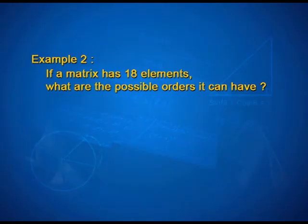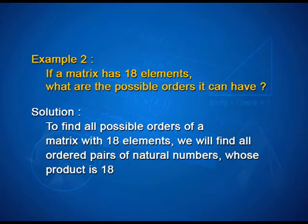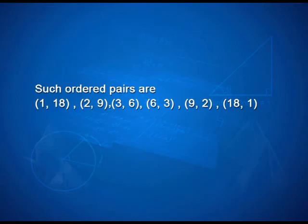Let us take up one more interesting example. If a matrix has 18 elements, what are the possible orders it can have? To find all possible orders of a matrix with 18 elements, we will find all ordered pairs of natural numbers whose product is 18. Such ordered pairs are 1 comma 18, 2 comma 9, 3 comma 6, 6 comma 3, 9 comma 2 and 18 comma 1.